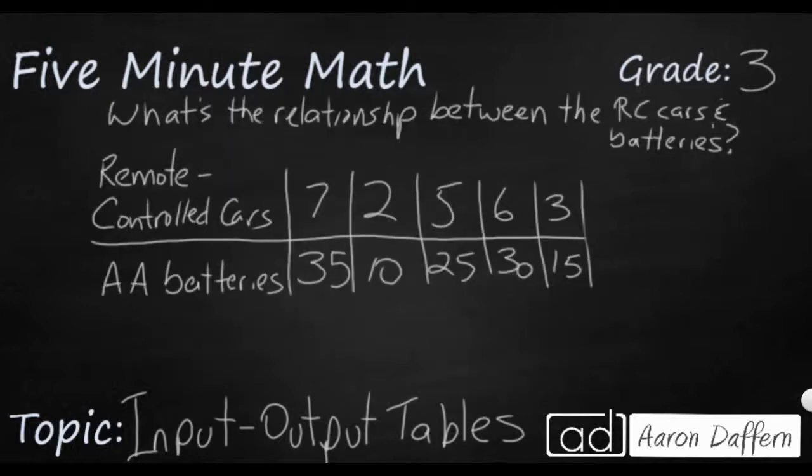Now we have two different types of items here. We have remote control cars and we have number of AA batteries. And you notice that they're on two different rows so that they go across. If you have seven remote control cars, you're going to need 35 batteries. You're going to read it up and down. If you have two remote control cars, you only need 10 AA batteries. But if you need five remote control cars, that requires 25 AA batteries and so forth.